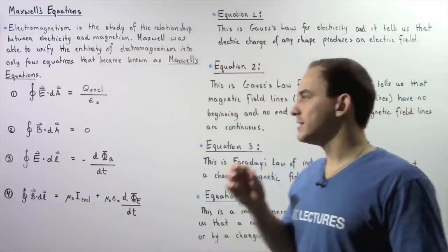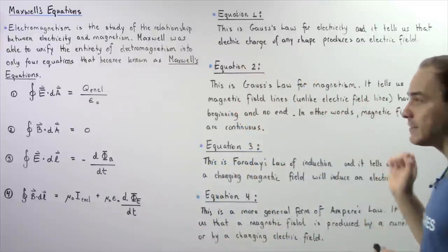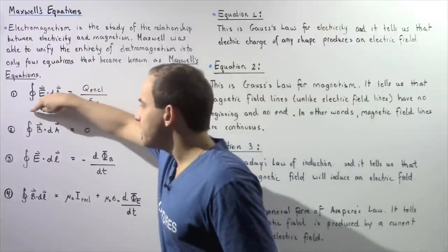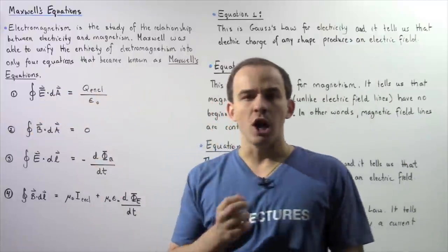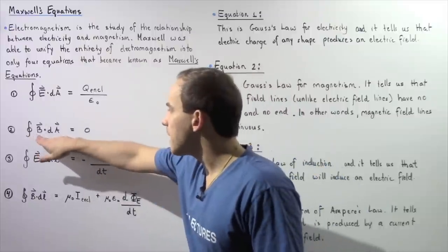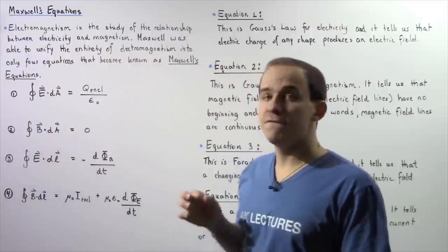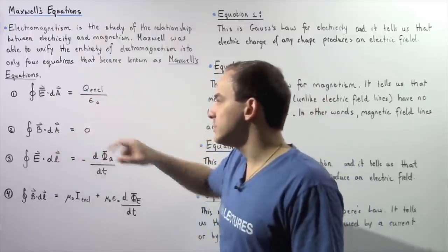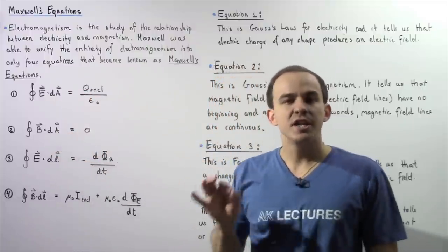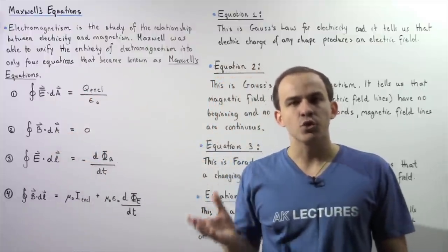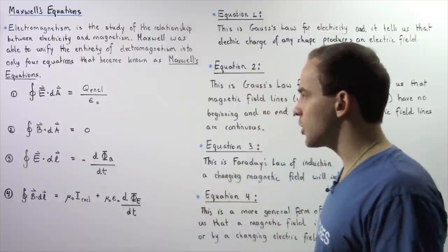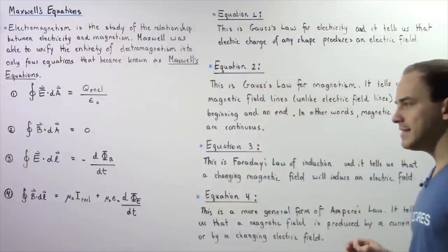field lines form continuous loops. This means that if we take the closed integral of the dot product of our magnetic field B and our infinitely small vector dA, that will equal zero because the net magnetic flux through our chosen Gaussian surface will be zero.